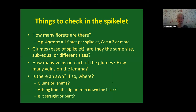Things to check in your spikelet: how many florets are there? For Agrostis there's only one floret per spikelet; in Poa, there are two or more. With the glumes — are they the same size, sub-equal, or completely different sizes? How many veins are in each glume and on the lemma? Is there an awn — the bristle found on some grasses? If so, is it on the glume or the lemma? Does it arise from the tip or down the back of the lemma? And is it straight or bent?